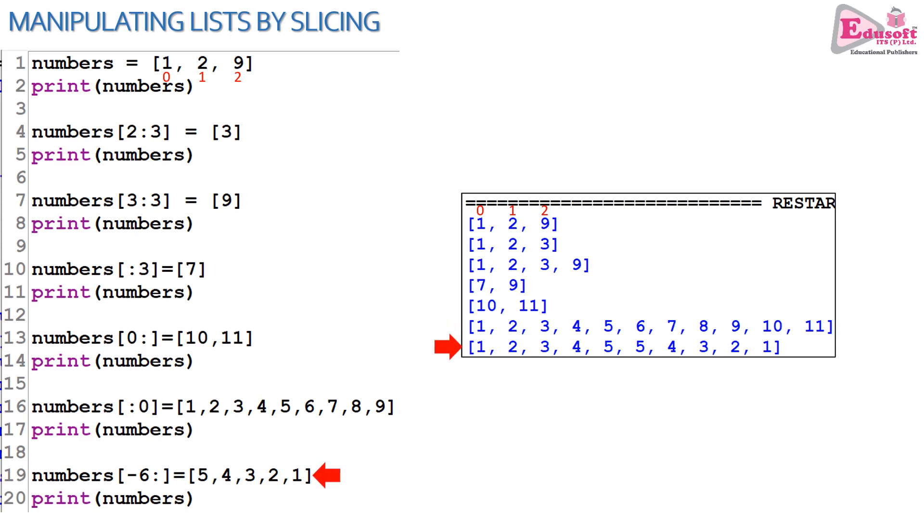And what is happening in line number 19? Here the index is minus 6. Minus 6 is counting from the right hand side: 1, 2, 3, 4, 5, 6. So our range of values is 6, 7, 8, 9. These values will be removed, and in their place, 5, 4, 3, 2, 1 will be inserted. So this is how by the help of slicing technique, we can replace a set of values in the list. We can not only replace, we can insert and append also.